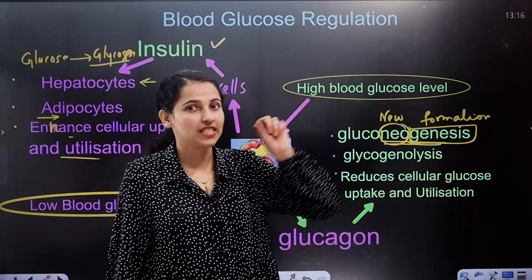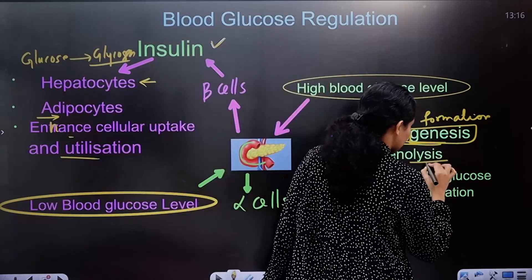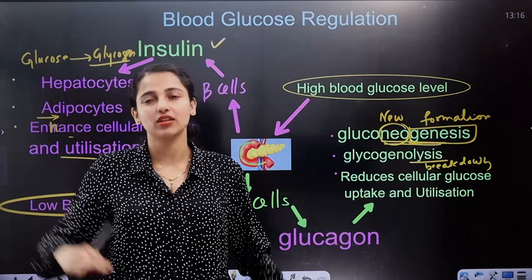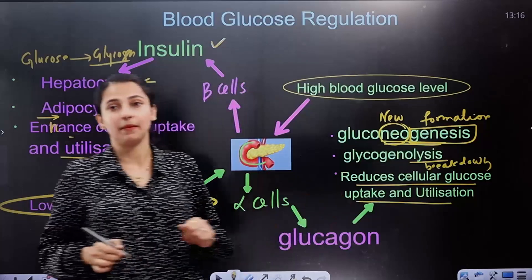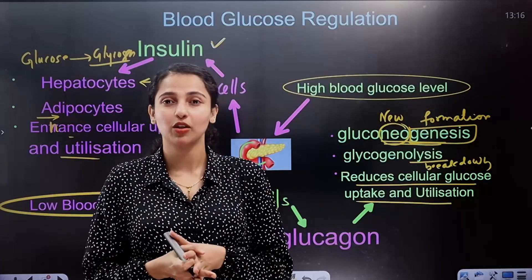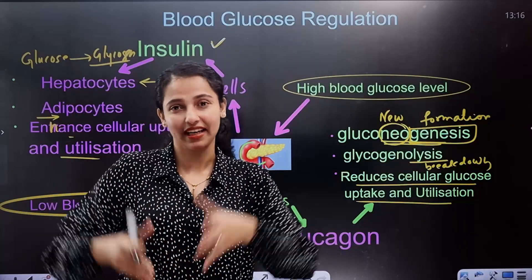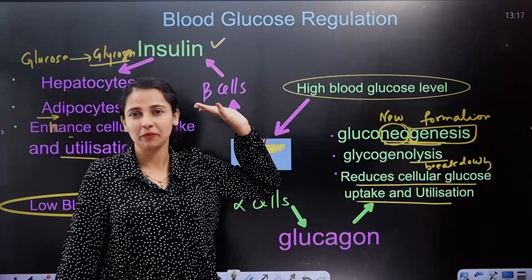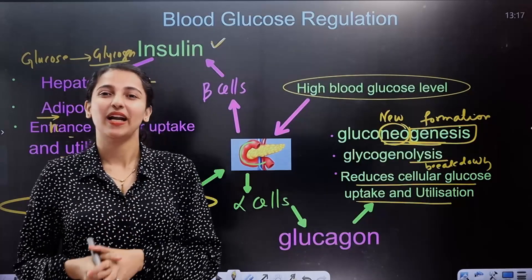Glucagon also promotes glycogenolysis — the breakdown of glycogen. 'Lysis' means breakdown, so glycogenolysis is the breakdown of glycogen to release glucose into the blood. Additionally, glucagon reduces cellular uptake of glucose. Together, these mechanisms maintain the blood glucose level.